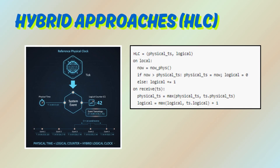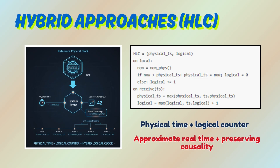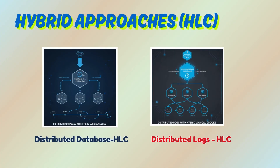Small skews can invert event ordering. Many real systems use a hybrid approach — physical time plus a logical counter — also called Hybrid Logical Clocks (HLCs). They let you keep approximate real time while preserving causality. HLCs are practical when you need wall clock semantics and causality; databases and distributed logs sometimes use this hybrid pattern.